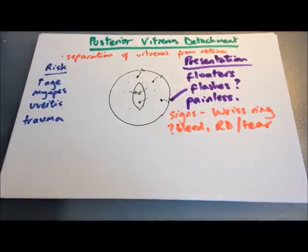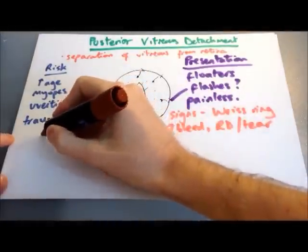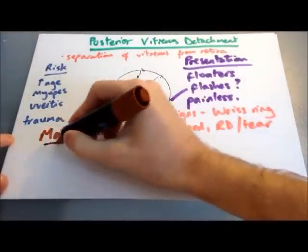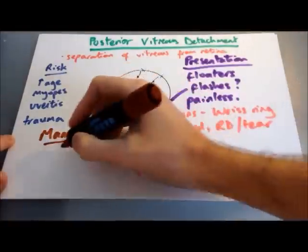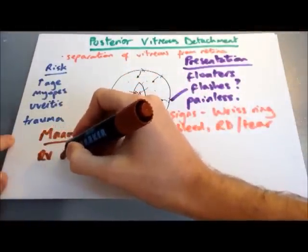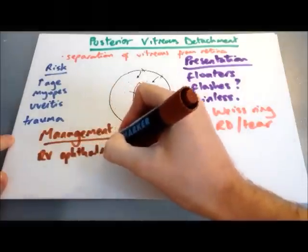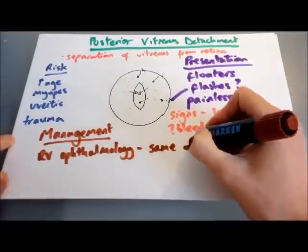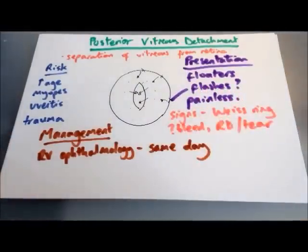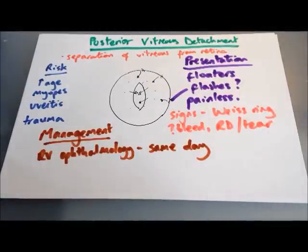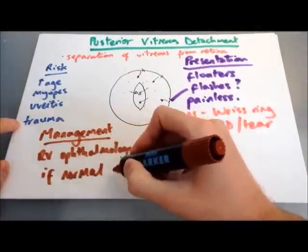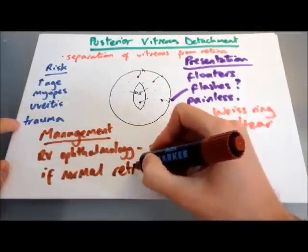The management of posterior vitreous detachment, if you're not in the ophthalmology department, is to refer them to ophthalmology on the same day to have a slit lamp examination to exclude any retinal tears or detachments. If there's no pigment and no blood in the vitreous and there's no clinical evidence of a break, then you can reassure the patient and send them home — the floaters will probably resolve over the next few weeks. If there are any retinal tears, they can be managed early on with laser therapy.